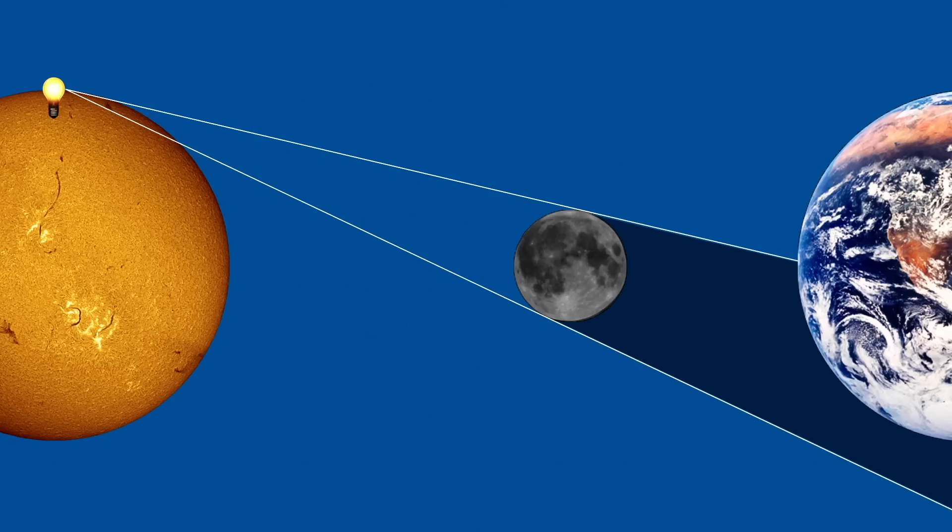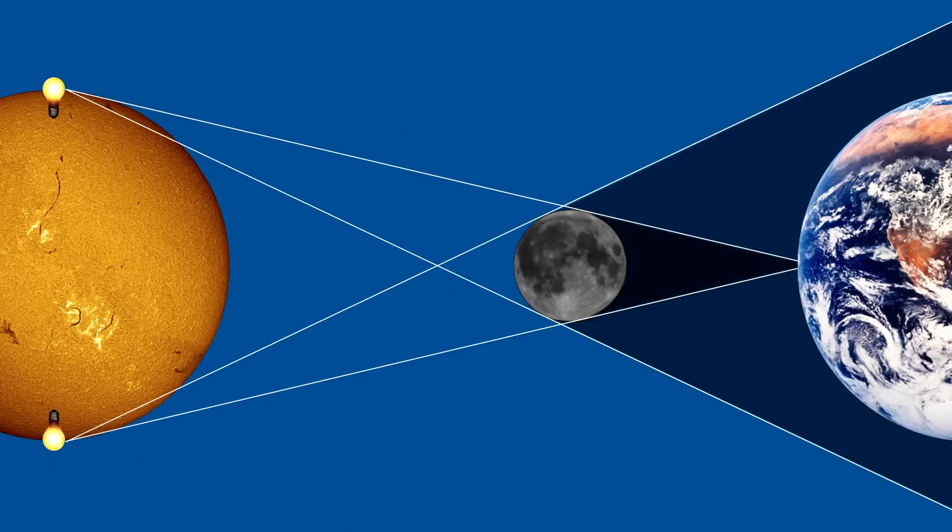Now, let's look at the other side of the sun. If we place a light bulb on the bottom of the sun, light from this bulb will also be blocked by the moon and cast a shadow of its own. Notice, there is a darker shadow where the moon is blocking the light from both the top and the bottom of the sun.